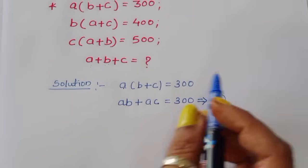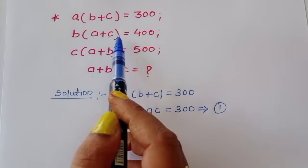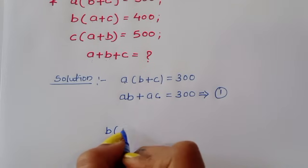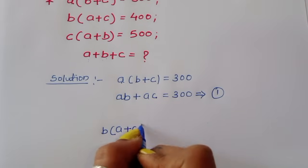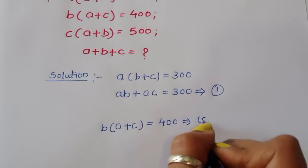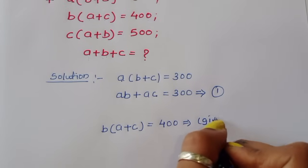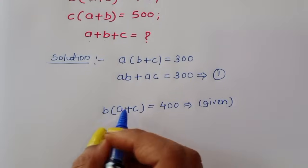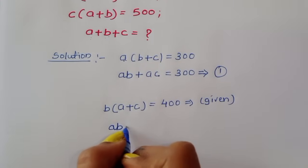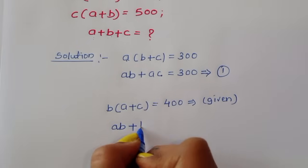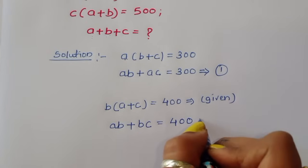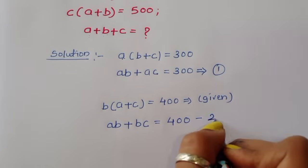Next, B times A plus C is equal to 400. Multiplying the terms, we get AB plus BC is equal to 400. This is equation number 2.